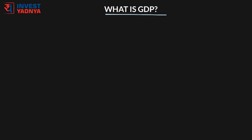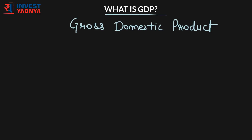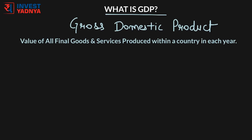GDP means Gross Domestic Product. It is the value of all final goods and services produced within a country in each year, i.e., the geographic area of the country.